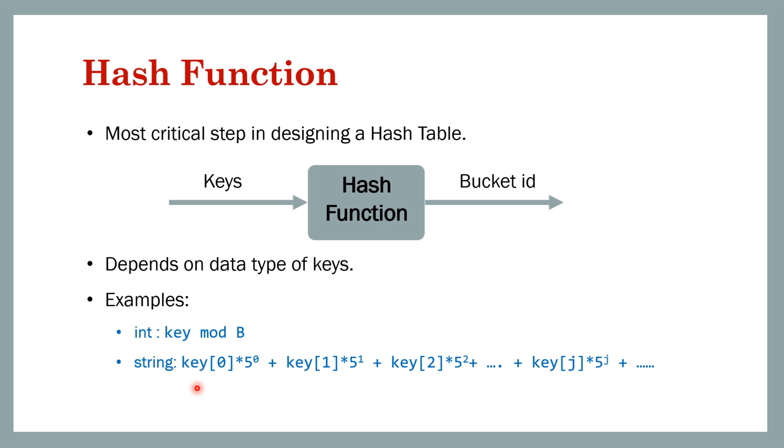We can take the ASCII value of key[0], which denotes the first character, and we can define a hash function like ASCII value of key[0] multiplied by 5 raised to the power of 0, plus ASCII value of the second key multiplied by 5 raised to the power of 1, plus the third key multiplied by 5 square.